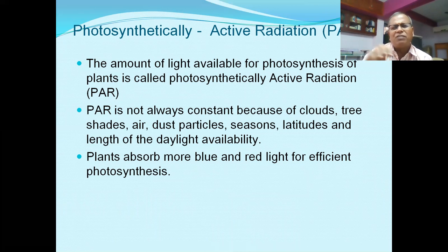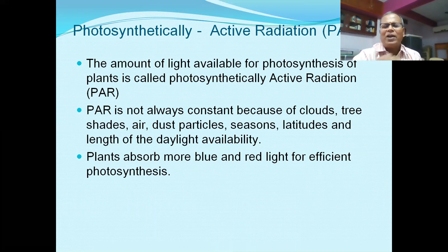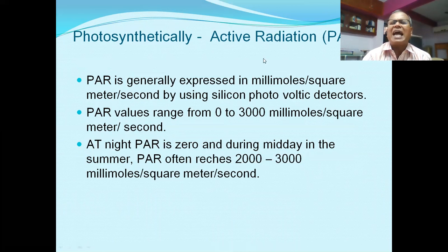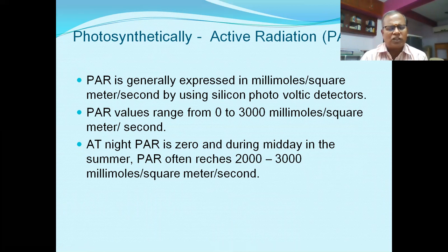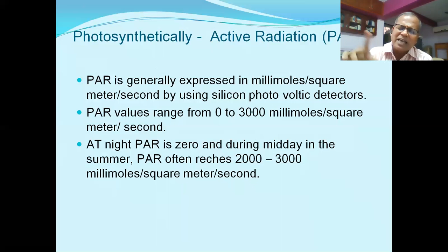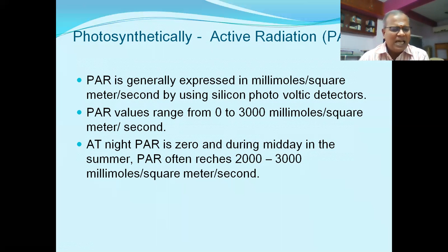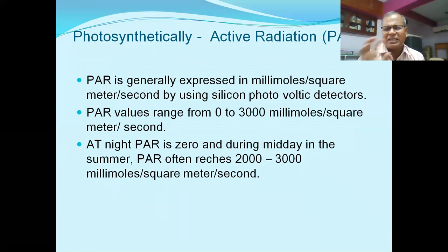In the photosynthetically active radiation, blue and red light are particularly important for photosynthesis. The power of PAR is generally expressed in millimoles per square meter per second, measured using silicon photovoltaic detectors.